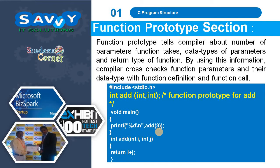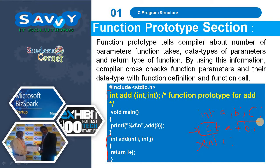The function prototype section tells the compiler about the number of parameters a function takes, the data types of those parameters, and the return type of the function. The compiler uses this to cross-check function parameters and data types with the function definition and function call. For example, if a sub-function is defined after main but not prototyped, it cannot be recognized. The function prototype is also called the blueprint or skeleton of a function.